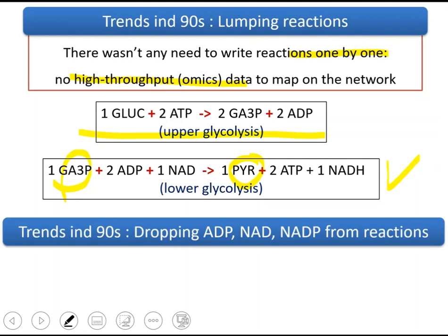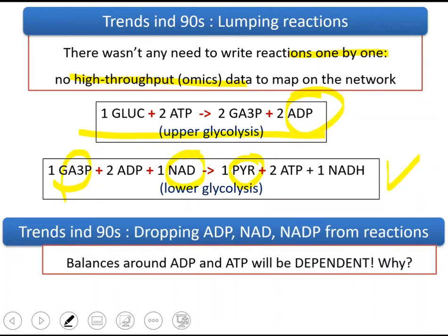One other trend in the 90s in some papers was not to show ADPs or NADs in the models. Because we didn't yet talk about the balancing in the mathematical formulation of simulation of metabolic networks. But if we have two ATP here, we will have two ADP here. If we have five ATP here, we will have five ADP here. So ATP and ADP carry the same information, and that's why this repetitive information was dropped from those models. It's okay if you don't fully grasp this — you will understand better when we switch to the mathematical formulas.